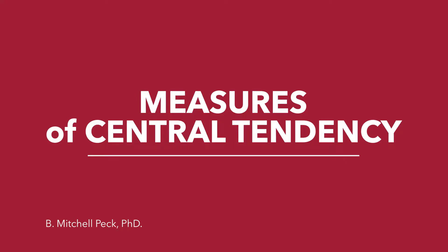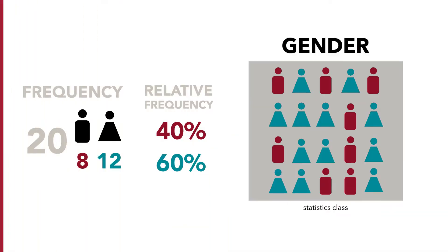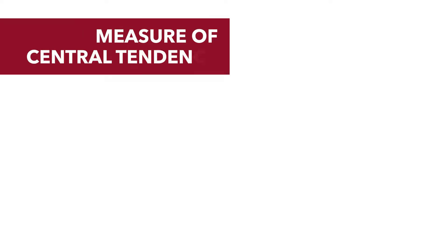In the previous tutorial, we looked at frequency distributions and graphs. These were simple ways to examine or look at the distribution or the list of data. In this tutorial, we're going to move to measures of central tendency.